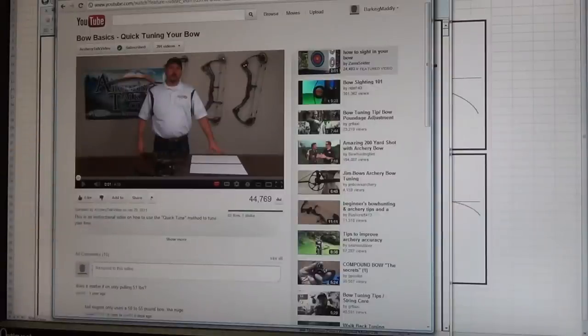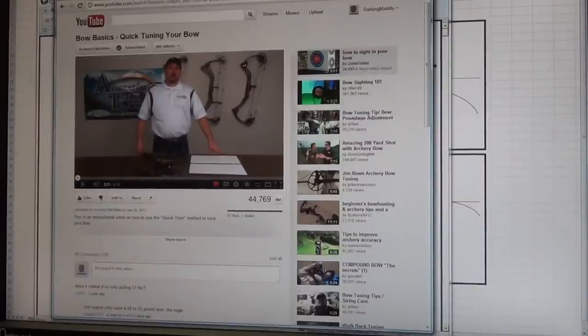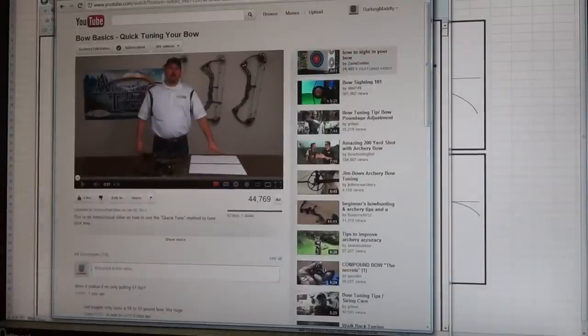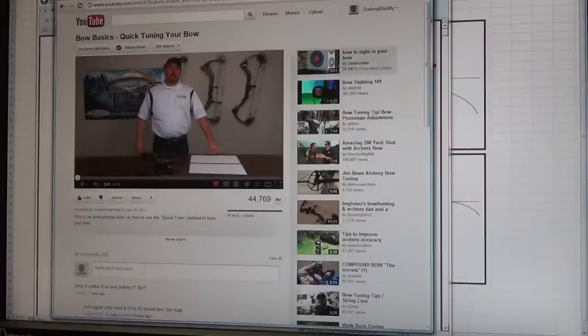And this guy right here, Sean from archerytalk.com, I'll put a link to this specific video below in the description. He mentions using a piece of paper with a half inch piece of electrical tape for setting up the targets. Now overall, everything in here makes a lot of sense, except for the fact that when he talks about having a bow set up for both 10 and 20 yards.